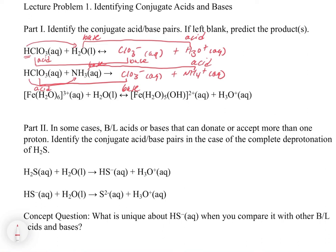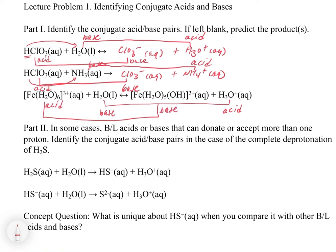The next example is a more complicated one involving a proton transfer. We have Fe(H2O)6 3+ plus H2O. We can see that H2O is going to H3O+, meaning it's gaining a proton, so water must be acting as a base here. That means Fe(H2O)6 3+ must be acting as the acid, and the resulting coordination complex product acts as the conjugate base on the other side.